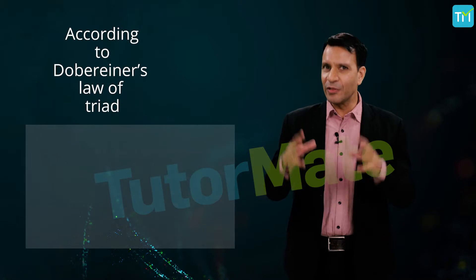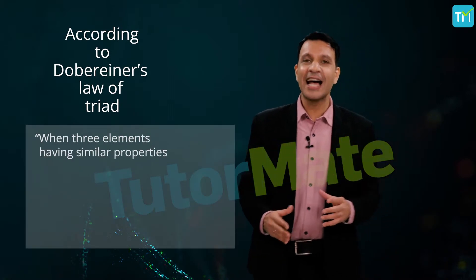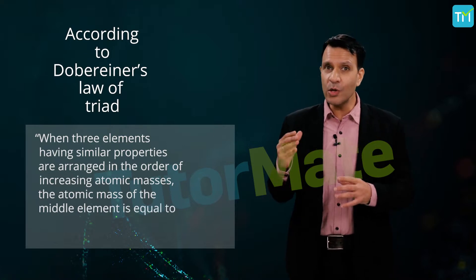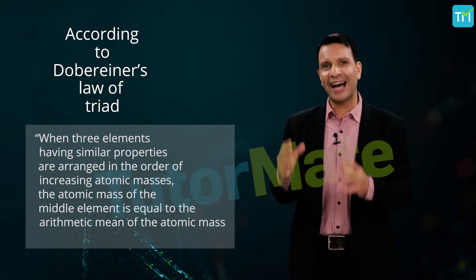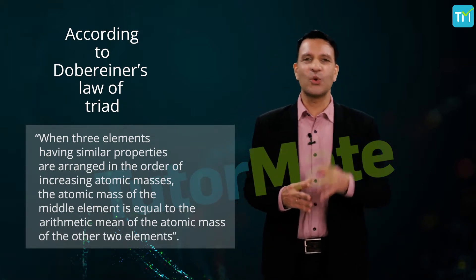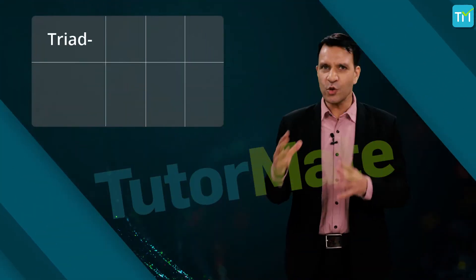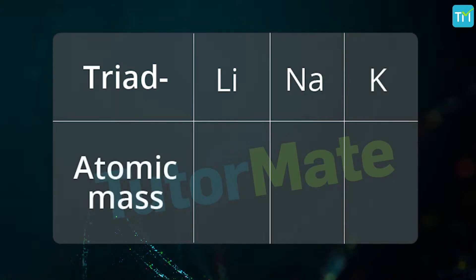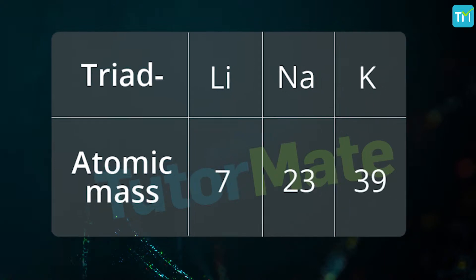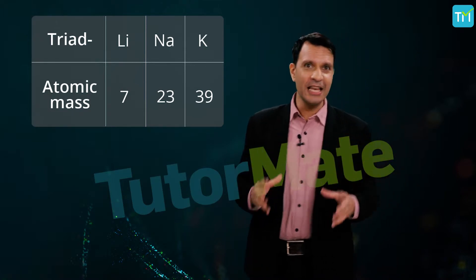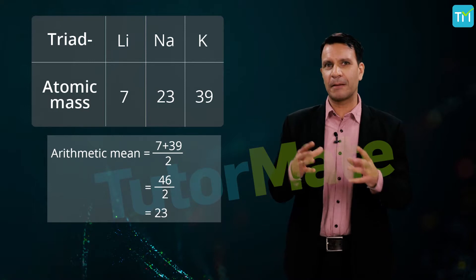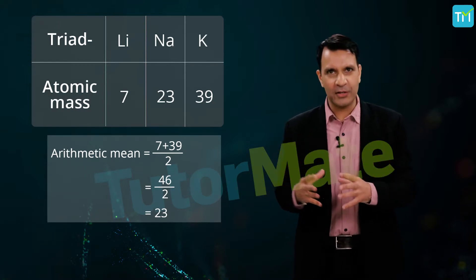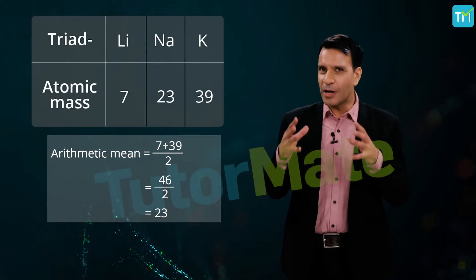According to Döbereiner's Law of Triads, when three elements having similar properties are arranged in the order of increasing atomic masses, the atomic mass of the middle element is equal to the arithmetic mean of the atomic masses of the other two elements. For example, he took the triad consisting of lithium, sodium, and potassium, with respective atomic masses of 7, 23, and 39. The average of the atomic masses of lithium and potassium is (7 + 39) / 2 = 23, which is the atomic mass of sodium.